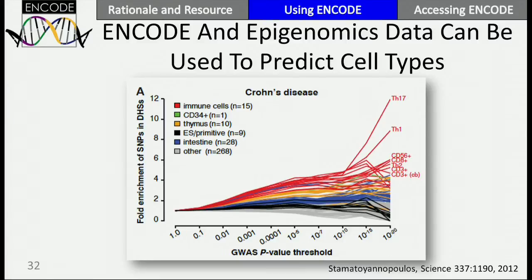People ask me all the time: what if the cell type I'm interested in is not in ENCODE? We have a few hundred cell types, so depending on how you slice things, your cell type may not be in ENCODE. But even if you cover up TH17 cells, the closely related TH1 cells show that immune cells are still the most enriched — more enriched than gut. So if one came at this with the hypothesis that there are two basic types of cell types involved, one could still tell which cell type the variants were working in, even if that cell type weren't in ENCODE.